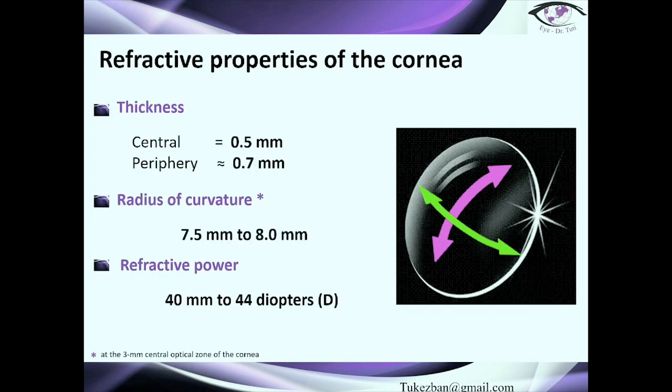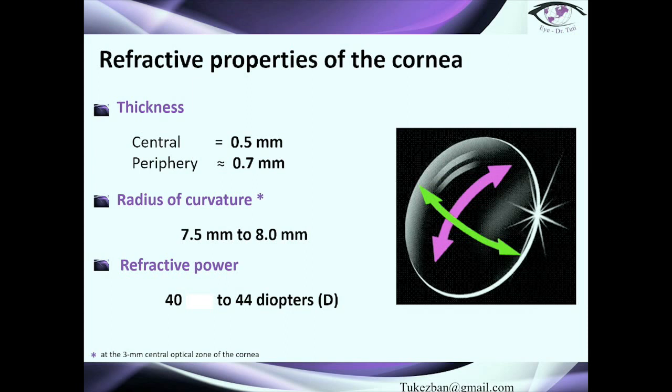The next refractive property is thickness. The central thickness of the cornea is approximately 500 to 550 microns, and the periphery is about 700 microns. Some references state that peripheral corneal thickness may reach approximately 1000 microns, though clinically this is rarely seen. The radius of curvature is between 7.5 mm and 8 mm, and the refractive power is normally from 40 to 44 diopters.